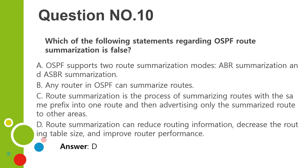Question number ten. Which of the following statements regarding OSPF route summarization is false? A. OSPF supports two route summarization modes: ABR summarization and ASBR summarization. B. Any router in OSPF can summarize routes. C. Route summarization is the process of summarizing routes with the same prefix into one route and then advertising only the summarized route to other areas. D. Route summarization can reduce routing information, decrease the routing table size, and improve router performance. Answer: D.